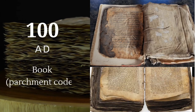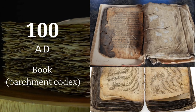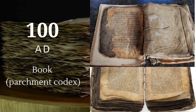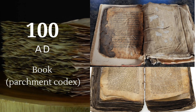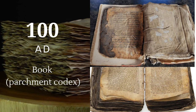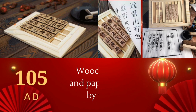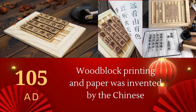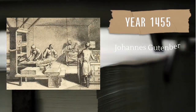In 100 AD, a book parchment codex was introduced, consisting of one or more quires of sheets of papyrus or parchment folded together to form a group of leaves or pages. In 105 AD, the Chinese invented woodblock printing and paper.